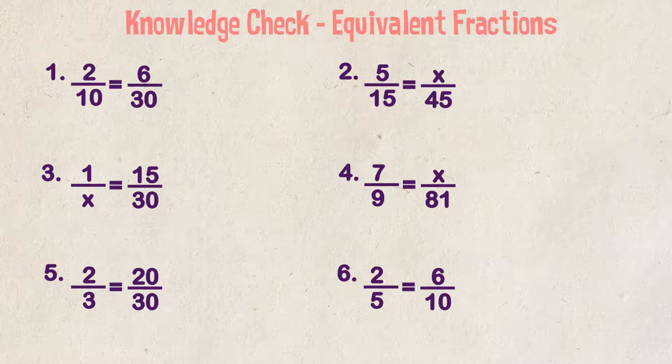Example two, 5 over 15 is equal to x over 45. We know that 15 goes into 45 three times. So we multiply our numerator of 5 by 3 and we get 15.